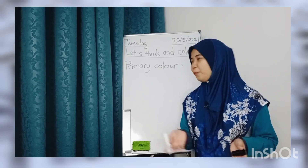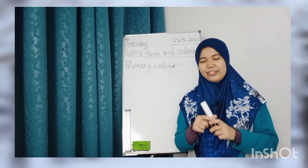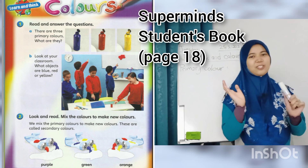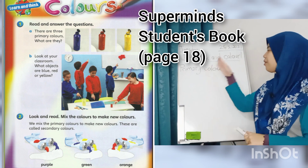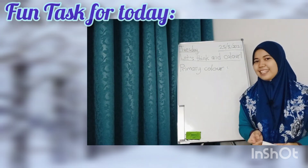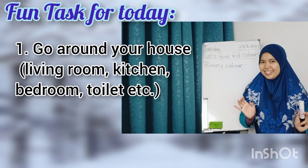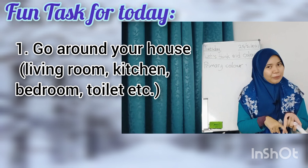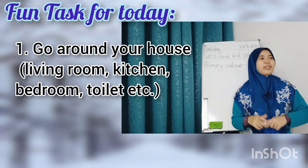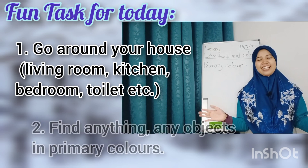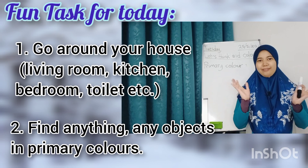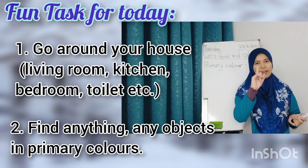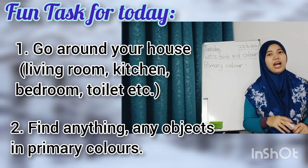Based on the previous video, you already know what a primary color is. There are three primary colors. You can also refer to your Supermind Students Book. Now that you know what primary colors are, I want you to go around your house and find any object — in the living room, kitchen, bedroom, or toilet — anything that shows a primary color. I'll give you one example.